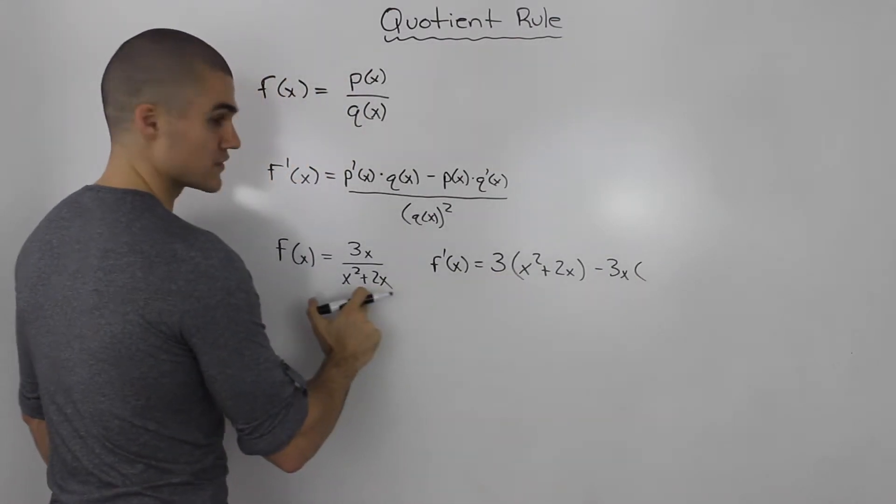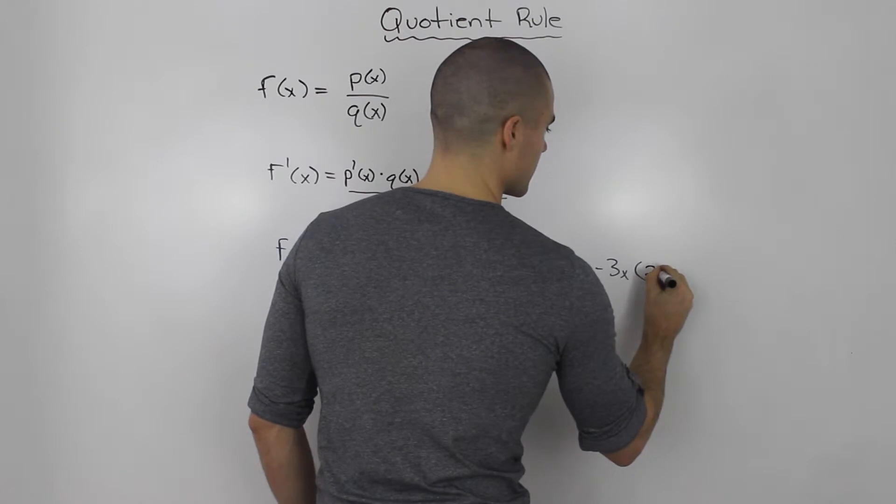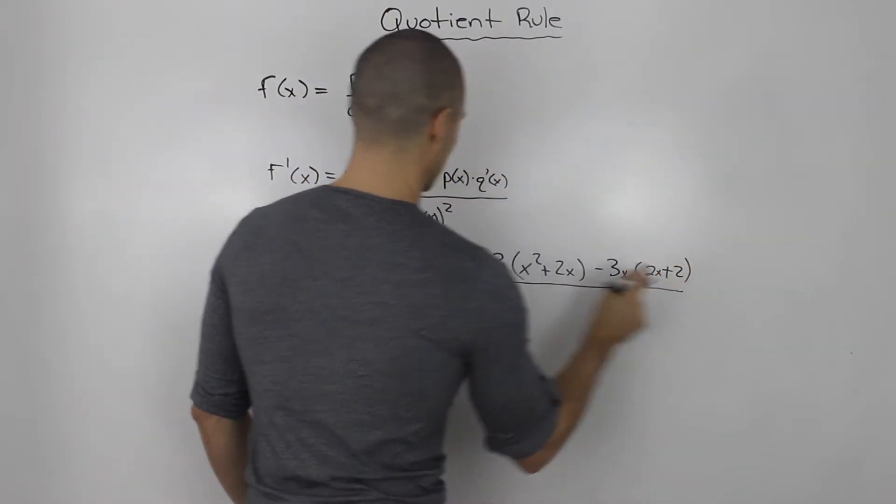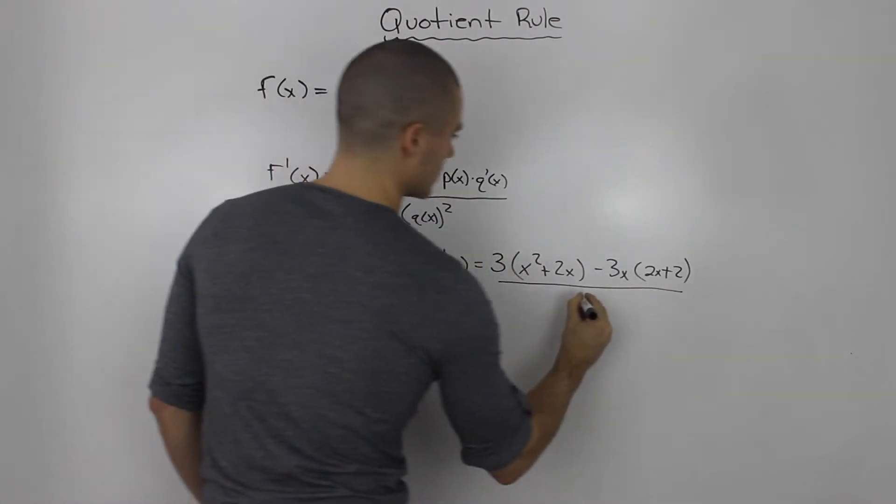times the derivative of the denominator. So that's going to be (2x + 2), all over the denominator squared: (x² + 2x)².